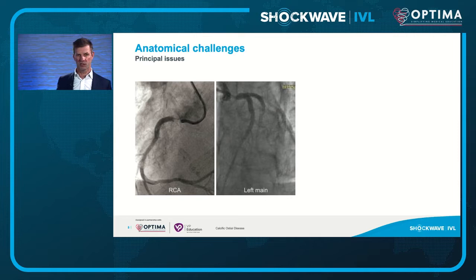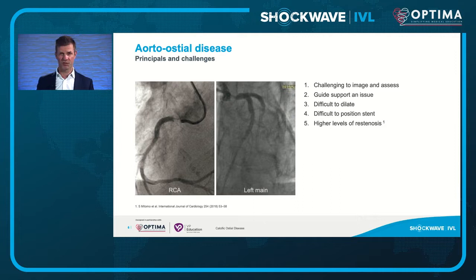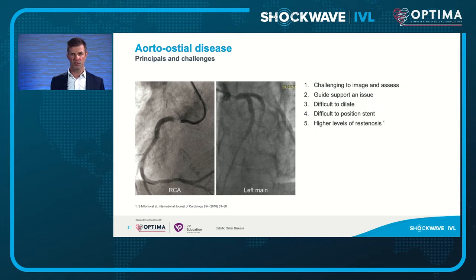There are specific challenges associated with aorto-osteal lesions, partly due to their location right at the aorta ostium. We can't image them well, our guide catheter doesn't sit properly — it goes past the lesion. They're by definition difficult to dilate, very difficult to position our stent, and they have high levels of restenosis — in some series reported as 10 times higher target lesion failure.